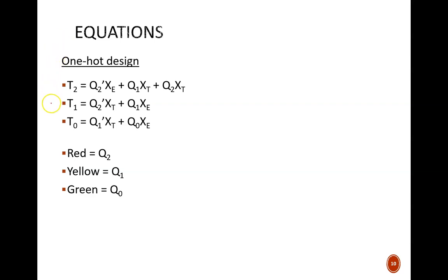Speaking of the one-hot design, the three output equations are as simple as can be. Each light matches the value of one of the flip-flops. For example, when q2 is high, the red light is on.